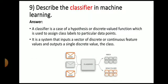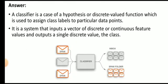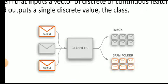Next question: describe the classifier in machine learning. A classifier is a hypothesis or discrete-valued function used to assign class labels to particular data points. It inputs a vector of discrete or continuous feature values and outputs a single discrete value — the class. For example, a classifier can segregate emails as spam or not spam.